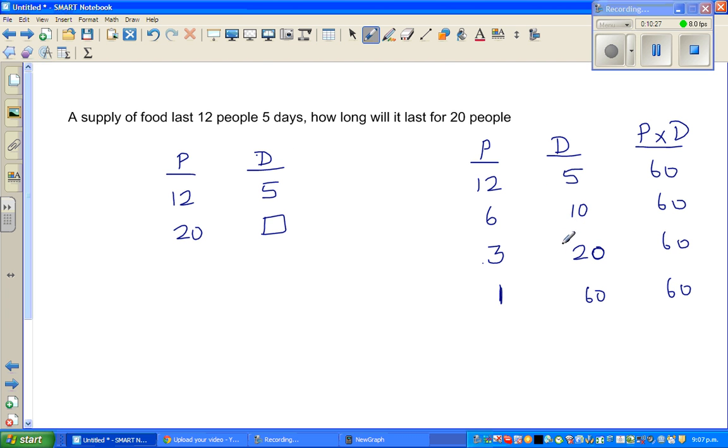So wherever you have an inverse proportion, this is an example of inverse proportion. When this is becoming half, this is becoming double. The product of the two numbers would always be constant. So using the same logic, here this is 12 times 5 is 60. So you are thinking 20 times what is 60? Well that's easy. 20 times 3 is 60. So for 20 people, it will last for 3 days.